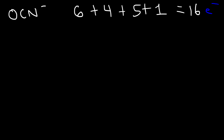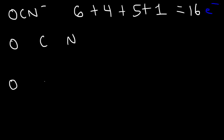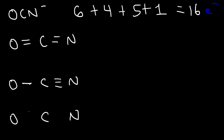Oxygen likes to form two bonds, carbon likes to form four, and nitrogen likes to form three. Because carbon likes to form the most bonds, we put it in the middle. There are three ways to draw this structure: a double bond between oxygen and carbon with a double bond to nitrogen, or a single bond to oxygen and a triple bond to nitrogen, or three bonds to oxygen and one bond to nitrogen. Each arrangement uses all 16 valence electrons with eight electrons around every atom.